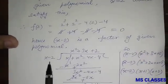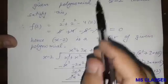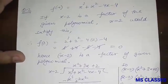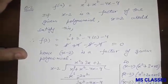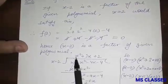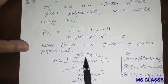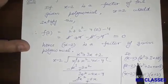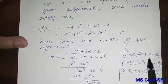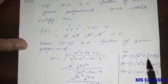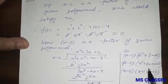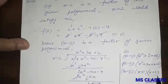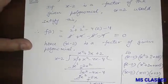Dividing f(x) by (x − 2) using long division gives the quotient x² + 3x + 2. Splitting the middle term of x² + 3x + 2, we get (x + 1)(x + 2). So the complete factorization is (x − 2)(x + 1)(x + 2).